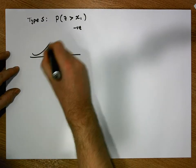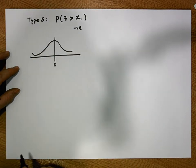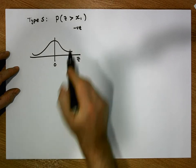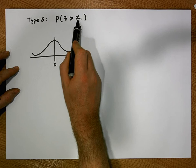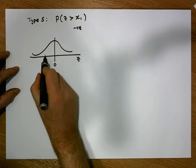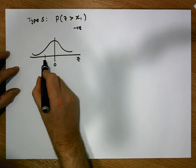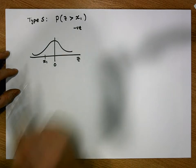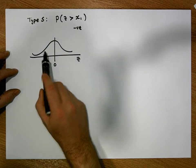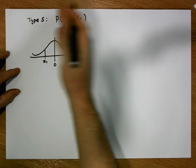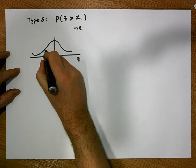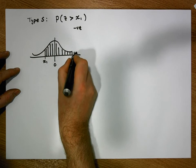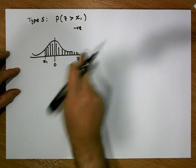That's a bell-shaped curve centred on 0. The horizontal axis represents the z-axis. We're interested in z-scores being greater than a negative value. All of our negative values are going to be on the left-hand side of 0. We're interested in z-values to the right-hand side of these negative values — in other words, we need to calculate the area to the right-hand side under the curve.